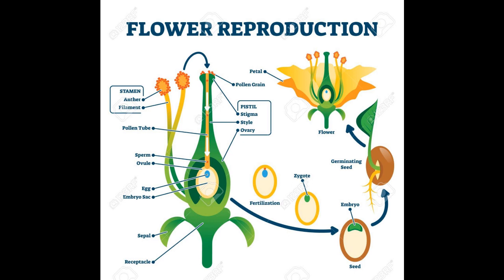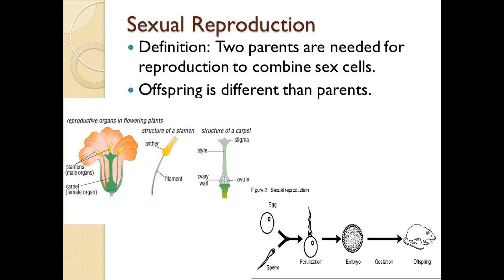This entire process of fertilization and formation of the zygote is known as sexual reproduction. In this mode of reproduction, the male and female parts are united to form the zygote. Sexual reproduction is very important for the formation of seeds. The seeds formed by this process are dispersed to different places by agents like air, water, birds, animals, and even human beings. When the seeds come in contact with soil and get favorable conditions, they grow into new plants.